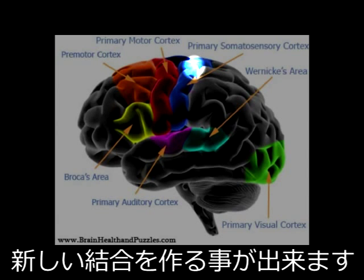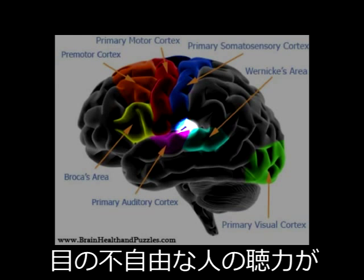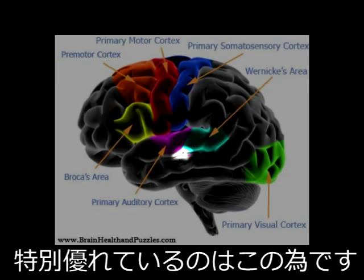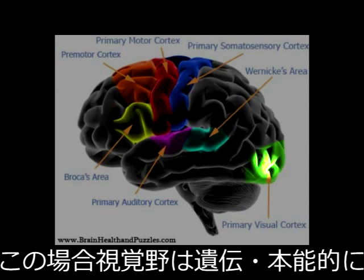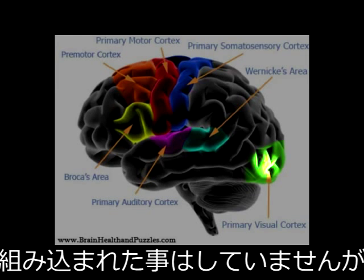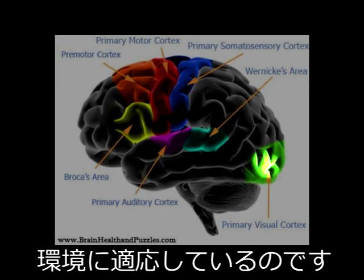This is the reason why humans who are blind have extraordinary hearing and can pick up sounds that people with normal vision could never hear. The visual cortex was not doing what genetics or nature intended it to do, but it adapted.